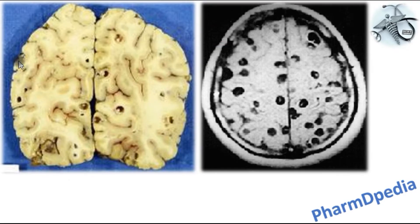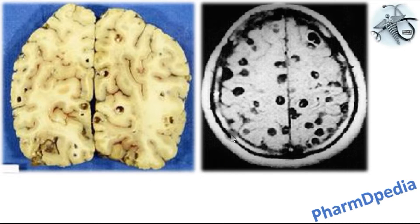Here we can observe some lesions produced by Taenia solium larvae. This is the cross-section of the brain, and this is the MRI report of the brain showing the lesions produced by the larval stages of Taenia solium.